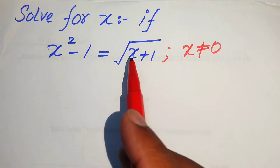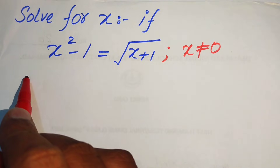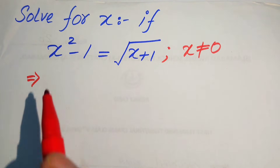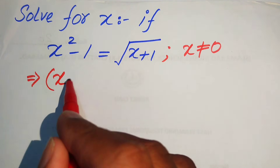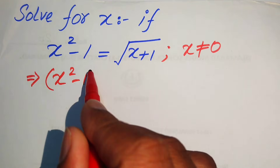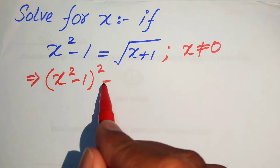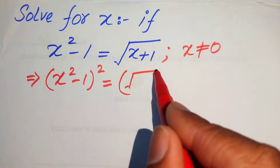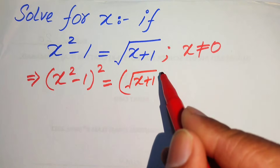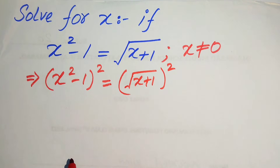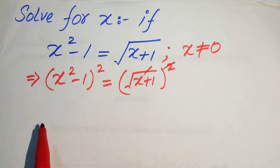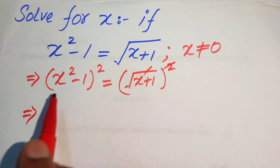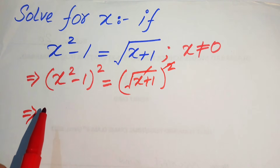First we remove the square root sign. In order to remove it, we take the square on both sides. So it is written as x squared minus 1, whole squared, equals the square root of x plus 1, whole squared. The square and square root cancel, leaving x squared minus 1 as a whole square.